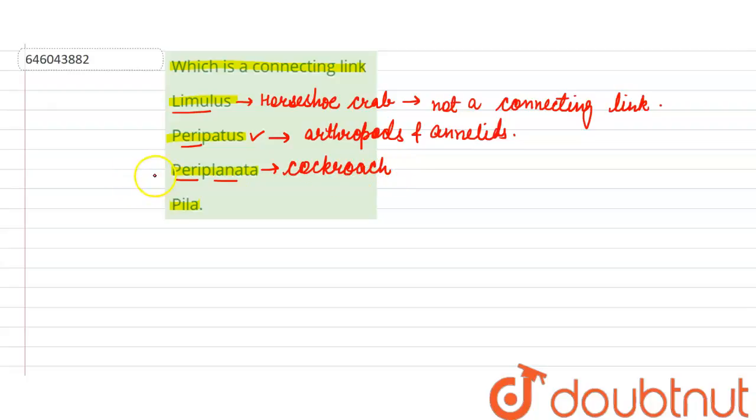The last option is Pila, which is a mollusk, and it is also not considered a connecting link between two organisms. So we can rule out this option as well. Now we will learn what is a connecting link.